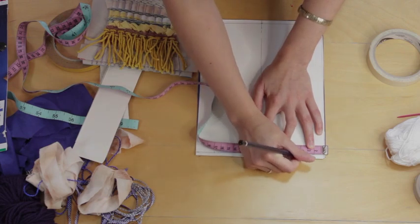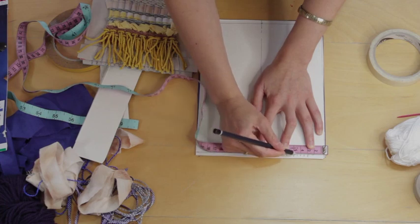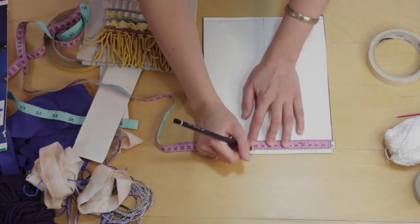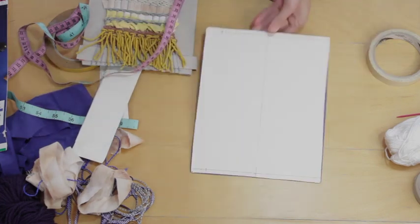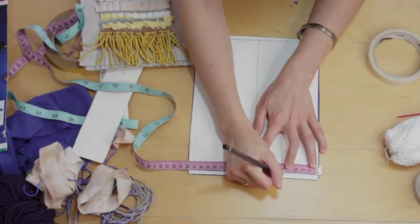So always working out from the center, so I've got one, two, three, four, five, six, seven, eight, nine, ten, eleven, twelve, thirteen, fourteen. So I need to have 14 on each of my four sections.